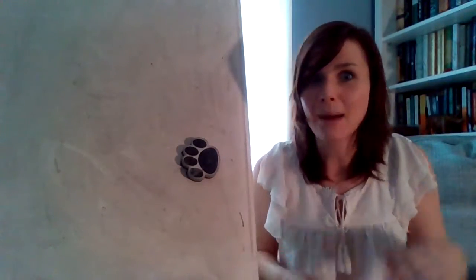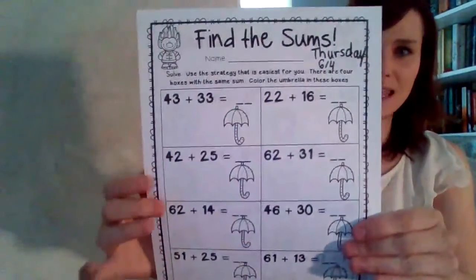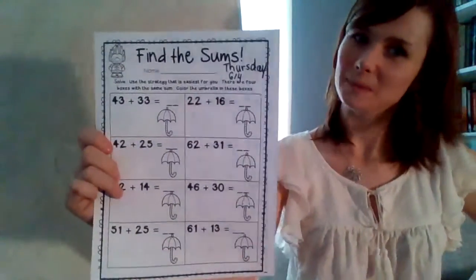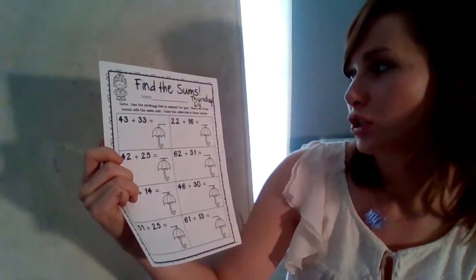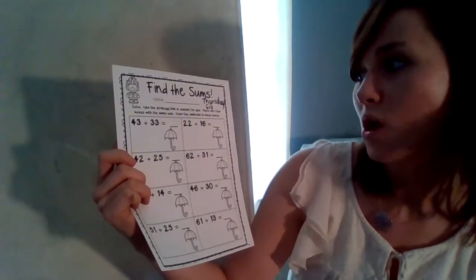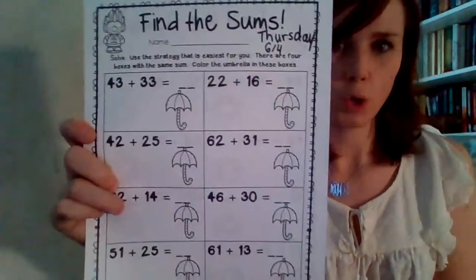Okay. So for our last math lesson, I really just want to review how to add a pair of two-digit numbers. We've been working on it all week, actually all school year. So I'd like you to get out your worksheet that looks like this. It says Thursday, June 4th on the top. Find the sums. It says solve, use the strategy that is easiest for you. There are four boxes with the same sum. Color the umbrella in these boxes.